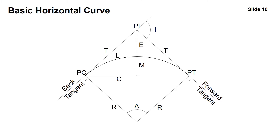Looking at the points on a simple horizontal curve, we start with the back tangent and the forward tangent, which go along with your preliminary traverse. When laying out the alignment of a road, you start with straight lines and then connect those tangents with smooth curves. The point where the tangents connect is the point of intersection. The angle between the back tangent and the forward tangent is the intersecting angle I, which is also equal to delta. The point where the curve leaves the back tangent is the PC, the point of curvature, and where it returns to the forward tangent is the PT, the point of tangency.